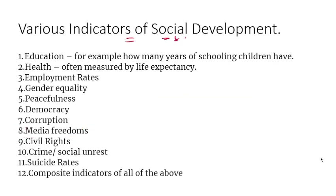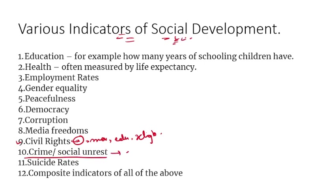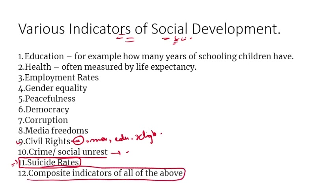Civil rights cover how much freedom citizens are given — including free speech, freedom of movement, education, and religion. Crime and social unrest — how much groups fight among themselves, crime rate, and even suicide rates — all show on which indicators a country is lagging. Composite indicators combine all these to give an overall picture of social development.